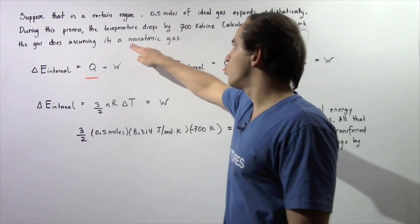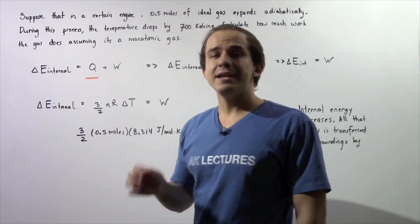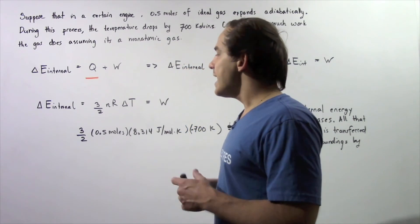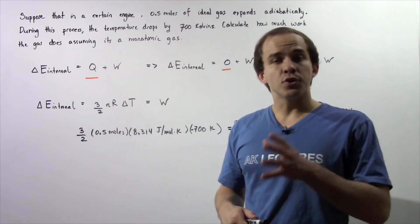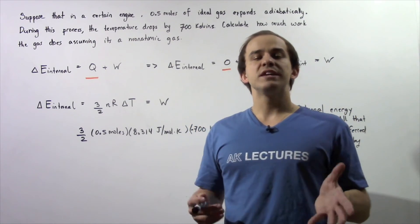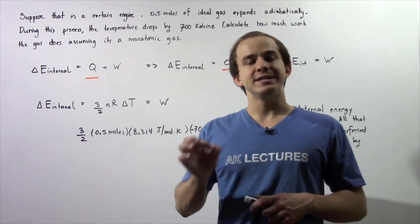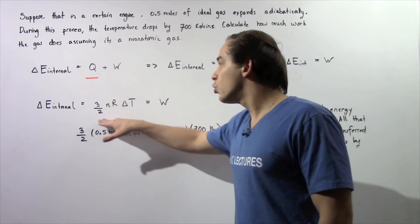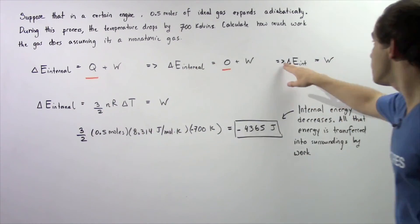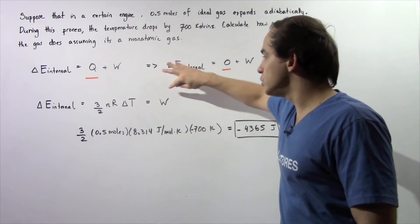Because we're dealing with a monatomic gas, that means that the change in internal energy of our ideal gaseous system is equal to the product of 3 divided by 2 multiplied by N, the number of moles of gas, multiplied by R, the ideal gas constant, multiplied by change in T. This quantity, because it's equal to this, we see from this result that this product is equal to W.